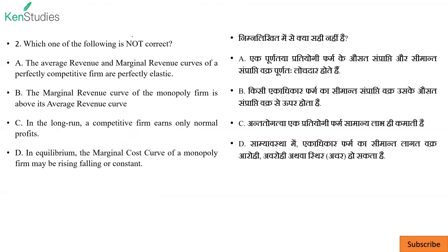Next question: which one of the following is not correct? देखो यह भी core question है — this year maximum core questions were asked. So: the average revenue and marginal revenue curves of a perfectly competitive firm are perfectly elastic — यह सही है. देखो, price में perfect information होता है, seller के पास भी perfect information है और buyer के पास भी perfect information है. तो उसमें average revenue और marginal revenue perfectly elastic होता है।